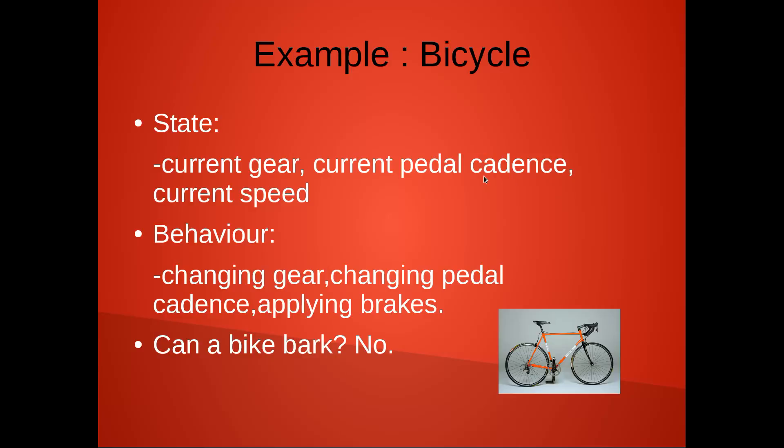Back to our tutorial. Bicycles have their state such as current gear, current pedal cadence, and current speed. And they have behavior: changing gear, changing pedal, and applying brakes. So I have a question for you guys — can the bike bark? Of course no, but why? Because a bicycle doesn't have a state that is required for barking.